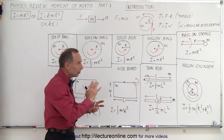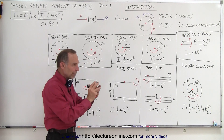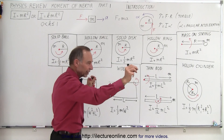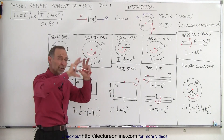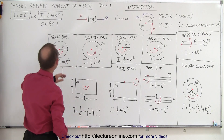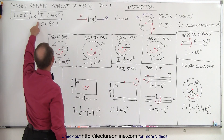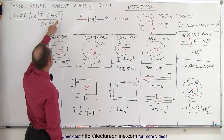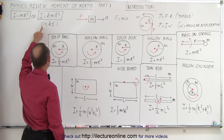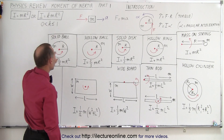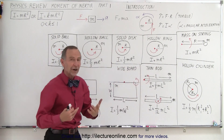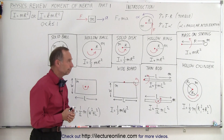Sometimes if the mass is not just a point mass arranged at some particular distance away from the point of rotation, but it's distributed throughout the object, then the equation becomes I equals some constant times mr squared, where the constant is a number between 0 and 1. It could be equal to 1 or it could be a fraction of 1.